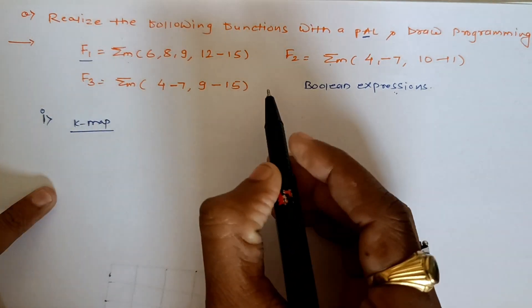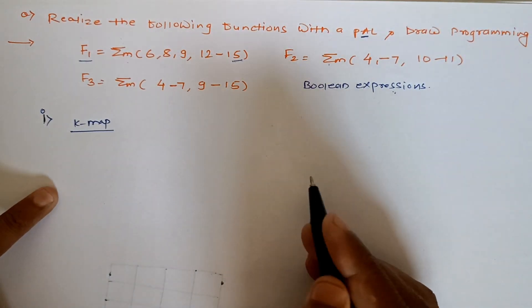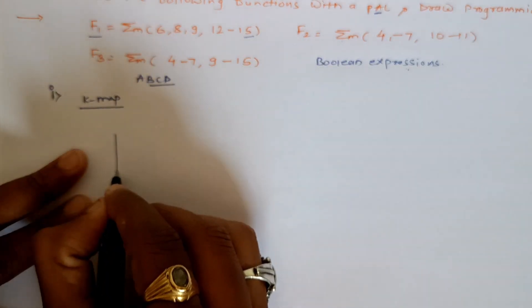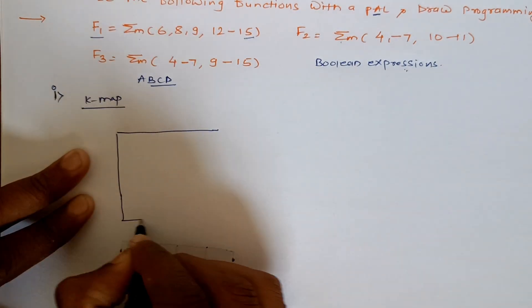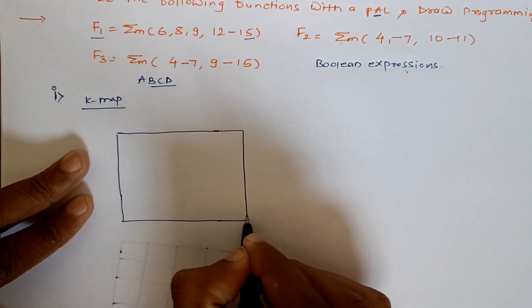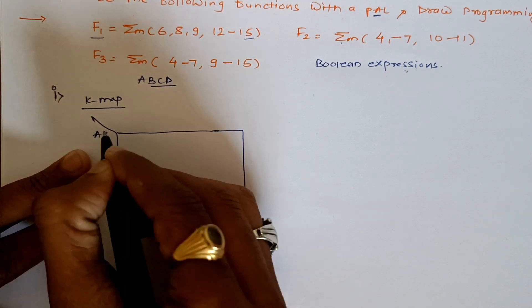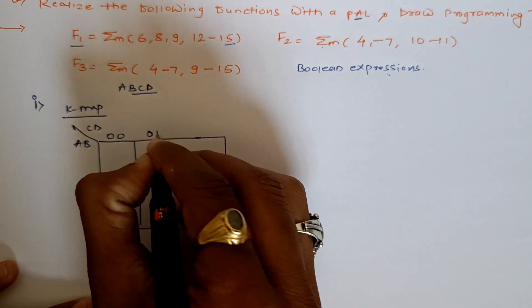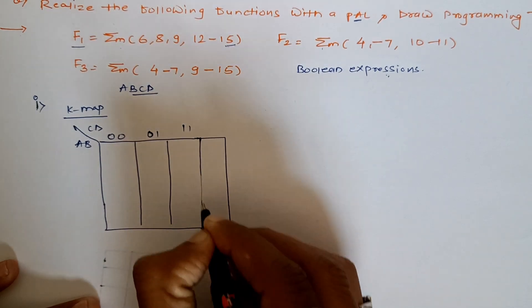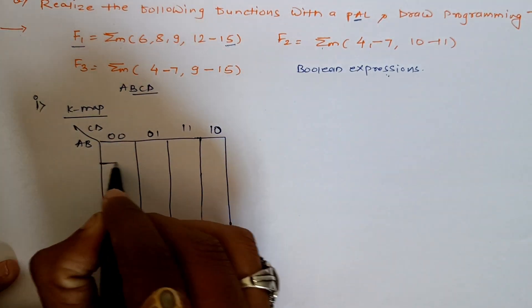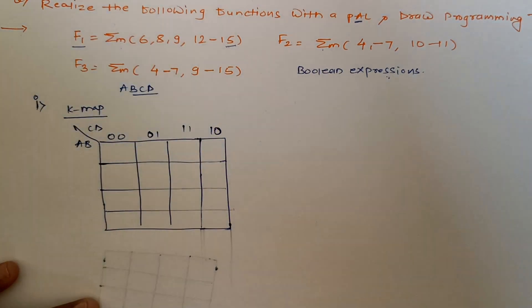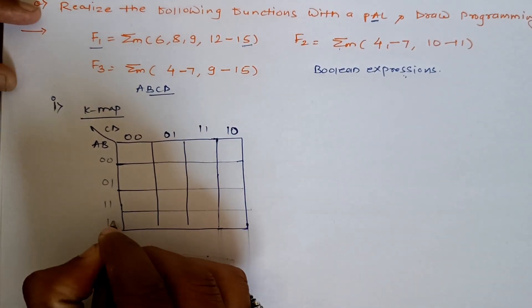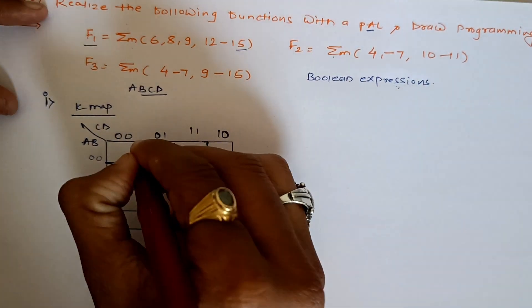Now when I come across F1, F1's last minterm is 15, which means we need four variables A, B, C, D. So we'll draw a four-variable K-map with inputs A, B on one axis and C, D on the other. We'll write their terms in Gray code order: 00, 01, 11, 10. Let's put their cell numbers also.